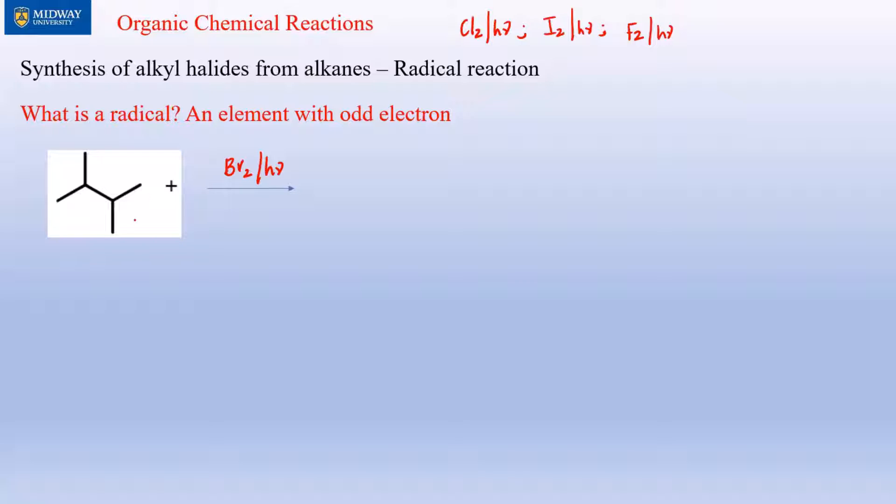If you start this reaction, first the Br2 reacts with light. Each Br gets broken in two pieces, and when the bond gets broken in two pieces you use half arrows not full arrows. In the process you produce two Br radicals.